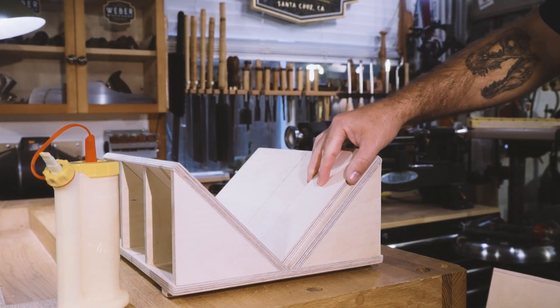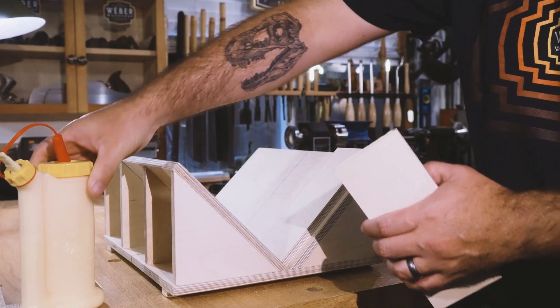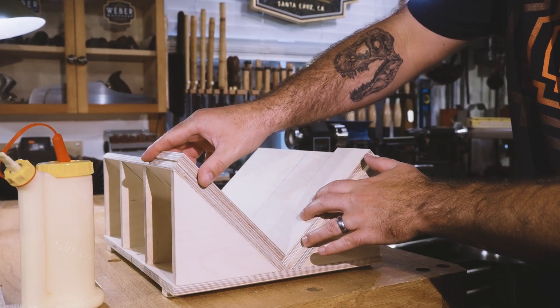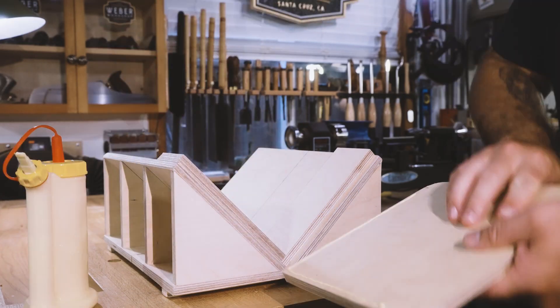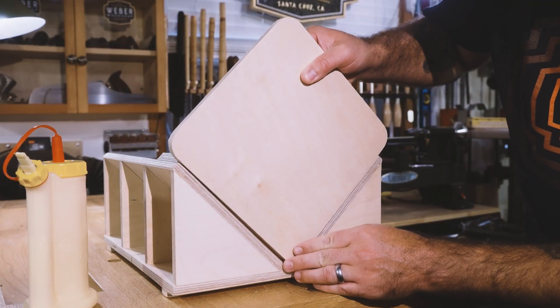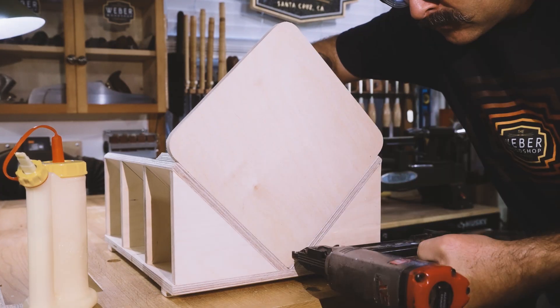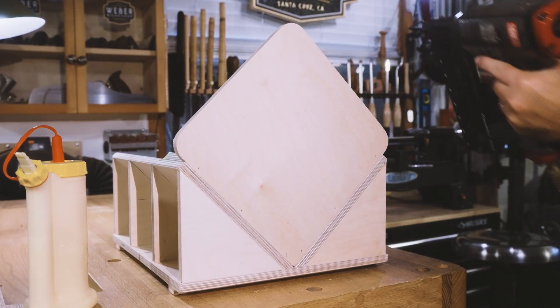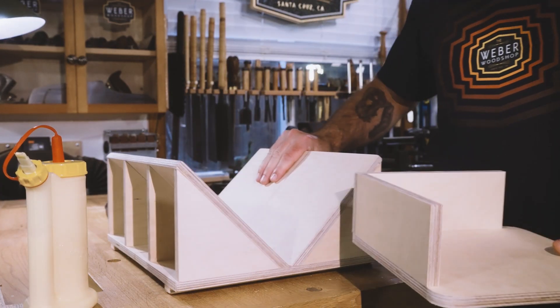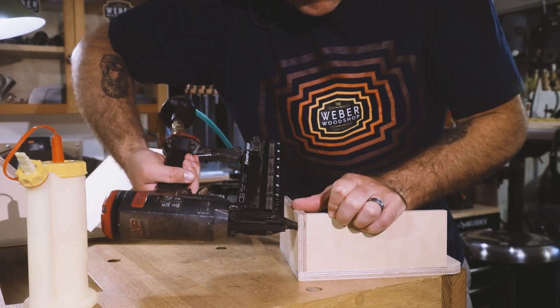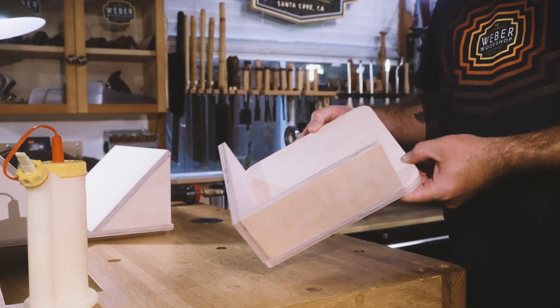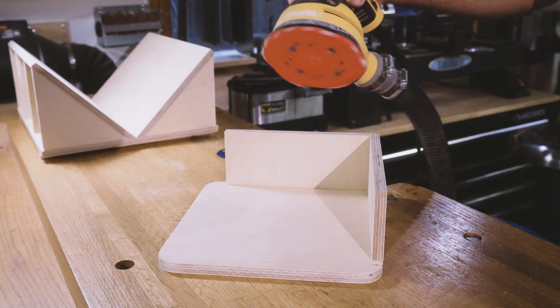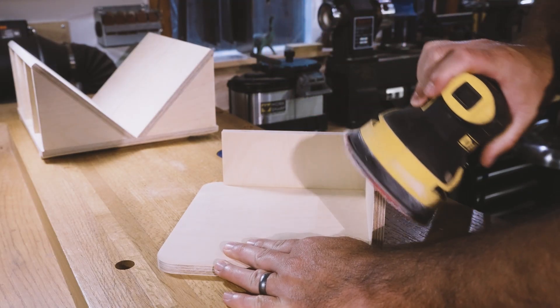Now we're going to use our jig to hold our 3 fence pieces while we glue and nail them together. But we're not attaching them to the jig, we're only attaching the fence pieces to each other. And again, take the time to sand down any rough edges.